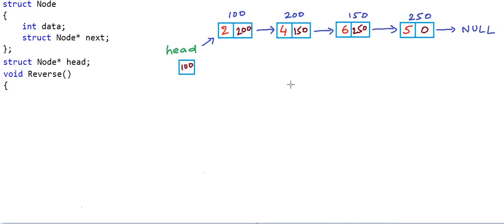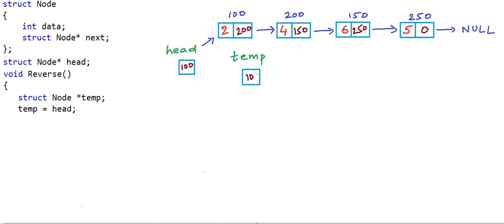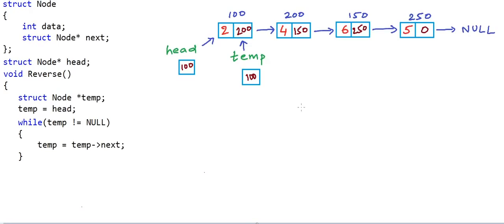To traverse the list in C code, we take a pointer-to-node variable, name it temp, set temp to head so it points to the first node, then run a loop: while temp is not equal to null, take temp to the next address with temp = temp->next. In our problem, as we traverse the list we have to reverse the link — setting the address field of a node as the address of the previous node instead of the next node. In a linked list, we always know the address of the next node but never the address of the previous node. So as we traverse the list, we will keep track of the previous node in another variable.